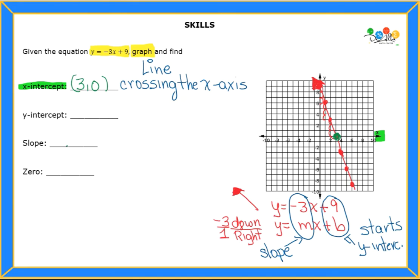So notice how the x-intercept has a value of 3, but the y has a value of 0. So very important that you see the connection. Now let's look at the next one. I need to find the y-intercept.